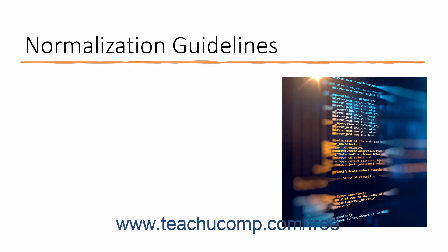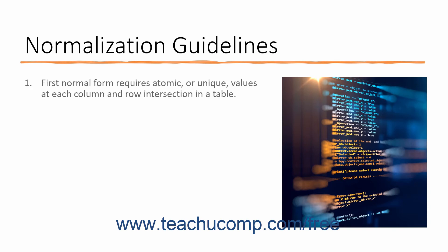While there have been many Normalization Guidelines proposed, many database designers find it adequate to design their relational databases to satisfy the Normalization Guidelines through the third or fourth Normal forms. The first Normal form requires atomic values at each column and row intersection in the entity table. There should be no repeating groups — thus no Item 1, Item 2 column design like you may see in a flat file table layout.